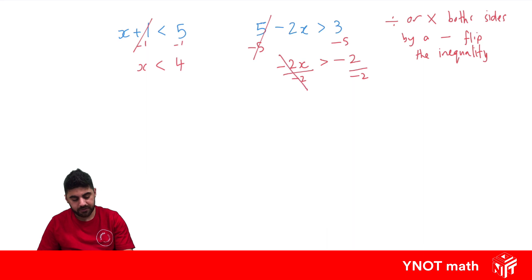So here we're dividing by a negative, we're dividing by minus 2. So our greater than sign becomes a less than sign. And then we just do everything like normal. Minus 2 divided by minus 2 gives us positive 1. So we get x is less than 1.